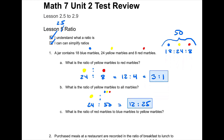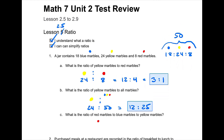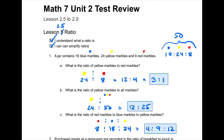Part C asks for the ratio of red to blue to yellow. The original order was blue, yellow, red, and we're now putting it as red, blue, yellow — so I just have to make sure that order is correct. Red is 8, blue is 18, and yellow is 24. This can be simplified — divide 2 into everything — so I get 4 to 9 to 12. At that point, I cannot simplify any more, so our answer is 4 to 9 to 12.